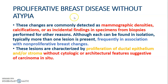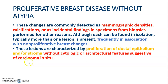The next category is proliferative breast disease without atypia. These changes are commonly detected as mammographic densities, calcifications, or incidental findings in specimens from biopsies performed for other reasons. Although each can be found in isolation, typically more than one lesion is present, and they are frequently associated with non-proliferative breast changes. These lesions are characterized by proliferation of ductal epithelial or stromal cells without cytologic or architectural features suggestive of carcinoma in situ.